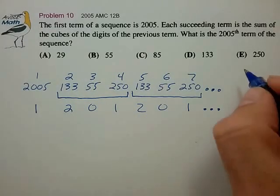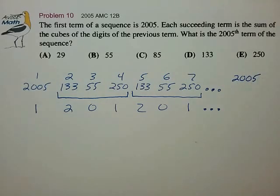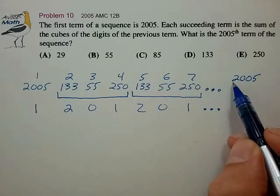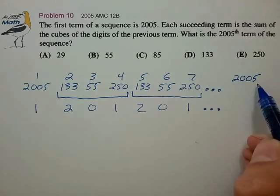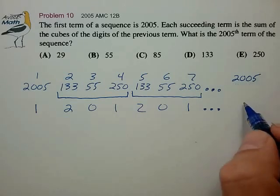And here we can now look at what the 2005th term is. We're trying to find the remainder upon division by 3 of 2005. And we notice that 2004 is an even multiple of 3, so 2005 will give a remainder of 1.